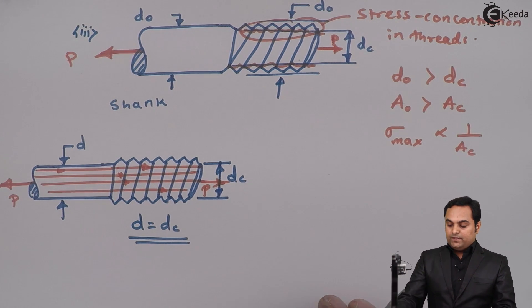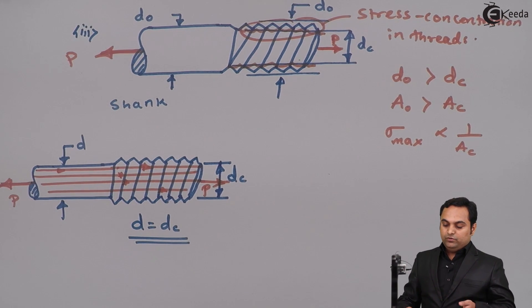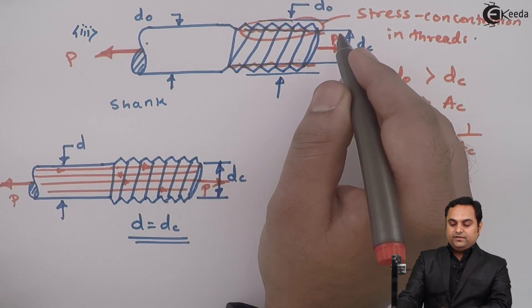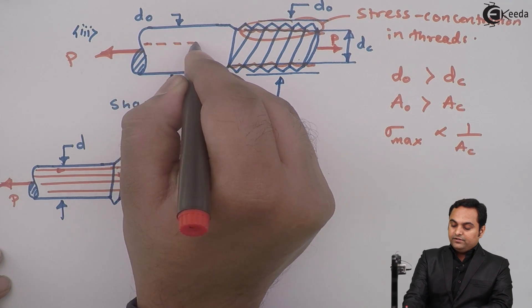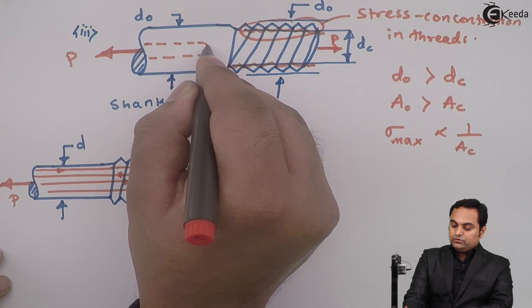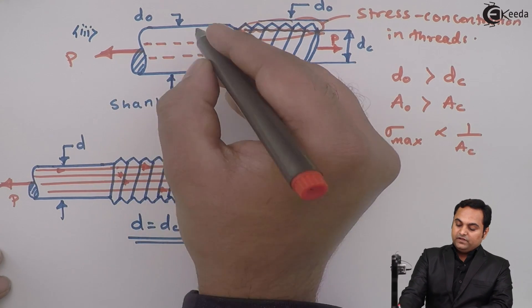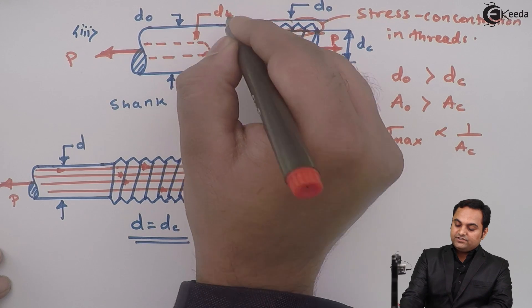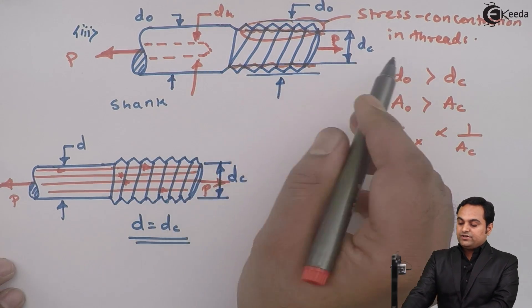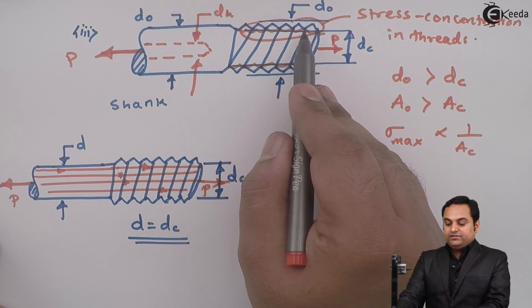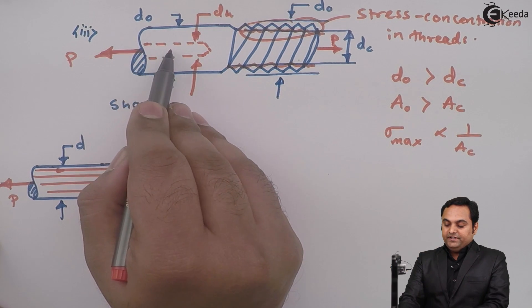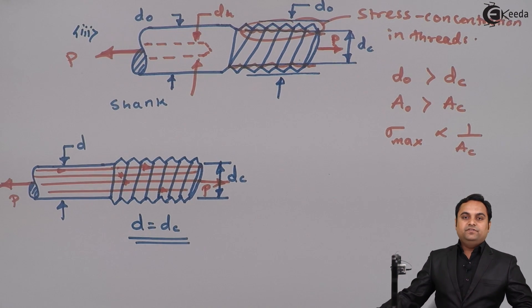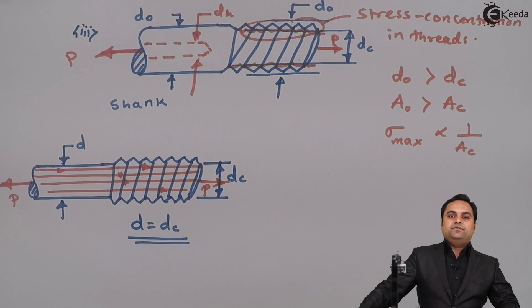The other method is to drill a hole inside the shank while keeping the dimensions the same. The diameter of this hole is denoted as small d with suffix h. Because of this hole, stress is not concentrated only in the threaded part but is also distributed at the hole, making the stress distribution uniform. In this video we have seen the methods for reducing stress concentration.